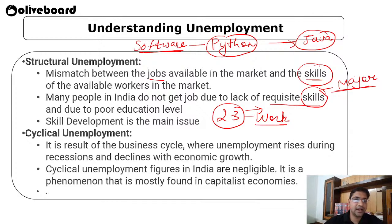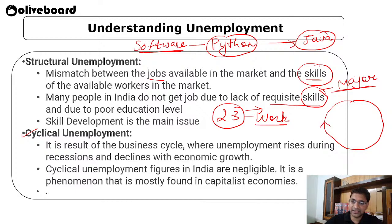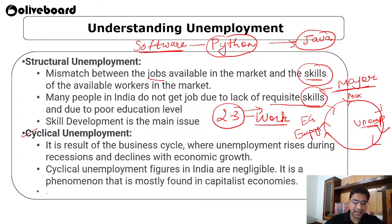Cyclical unemployment is a result of the business cycle, where unemployment rises during recession and declines with economic growth. When the business cycle is rising, employment is at maximum; when business goes into recession, unemployment increases. This type of cyclical unemployment in India is not very high — it is mostly found in capitalist economies.